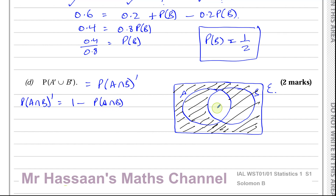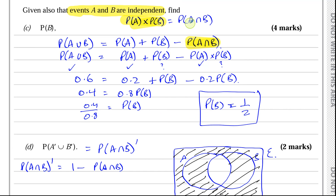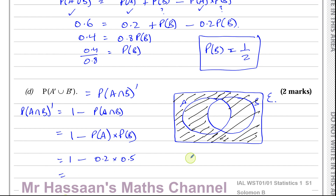Now we know P(A) and P(B), so using independence: 1 minus P(A) × P(B) = 1 minus 0.2 × 0.5 = 1 minus 0.1 = 0.9. So the probability of A complement union B complement is 0.9. That's the answer to part D.